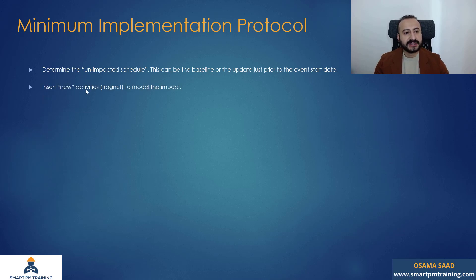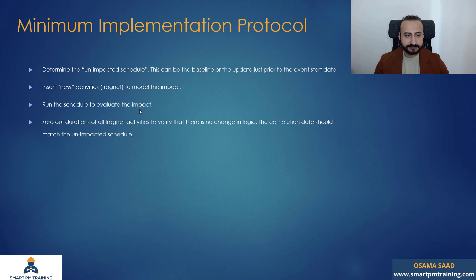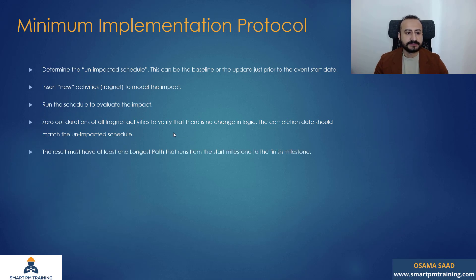Insert new activities or a fragmentary network — a fragment for short — to model the impact. Run the schedule to evaluate the impact. Then zero out the duration of all fragment activities to make sure that there was no other change in the schedule.